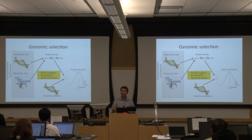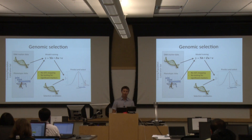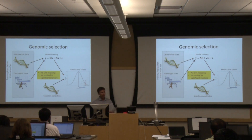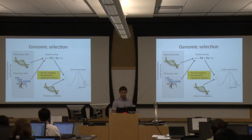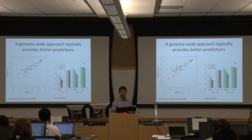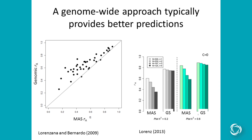The difference between this approach and traditional marker-assisted selection is we're not doing QTL mapping — we're not first identifying which markers we think are really important for our trait and using only those for making selections. We're simply combining all the DNA marker data together and building a single statistical model. There's no statistical testing going on here.